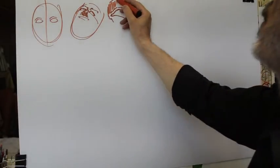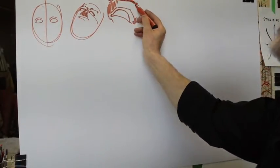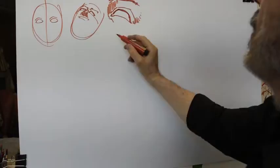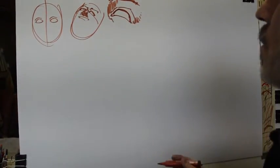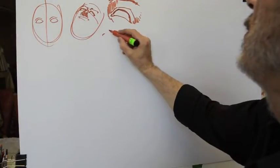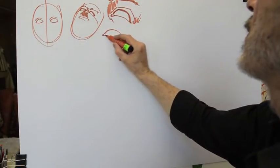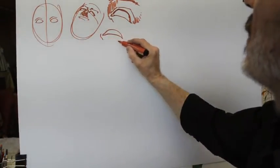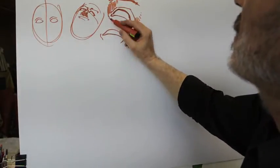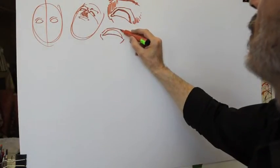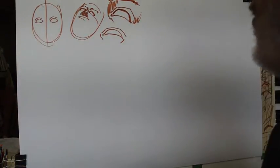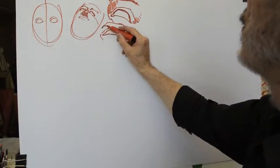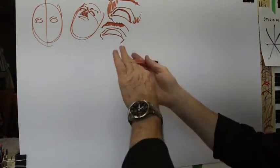The eyebrow might be slightly shadowing the eye socket. As you know, it's darker there. It depends on the angle — if the angle is much more pronounced, you might see only very little. This part might be very large or very low depending on the sockets. The eyebrow might almost be touching the eye. Everything depends on the angle of the face.